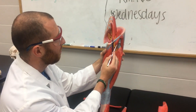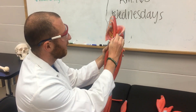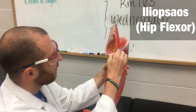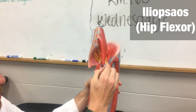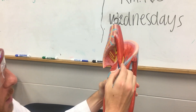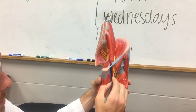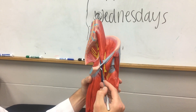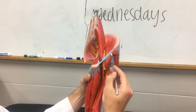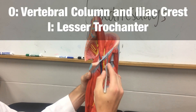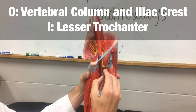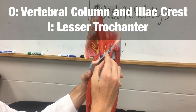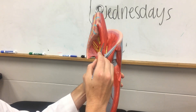We also have the iliopsoas muscle, often referred to as the hip flexor muscle. As we can see here, it crosses the inguinal ligament, so it crosses the hip joint. Iliopsoas.